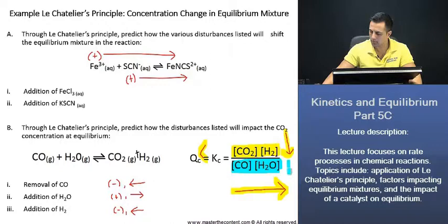If there is a decrease here in our reactants, then what ends up occurring is our reaction quotient will be greater than our equilibrium constant. Therefore,